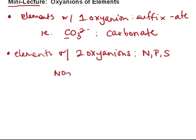If we looked at the nitrogen examples, that would be NO2- and NO3-. The one with the least number of oxygens has the suffix -ite, so this would be nitrite. And -ate would be the other, so nitrate.